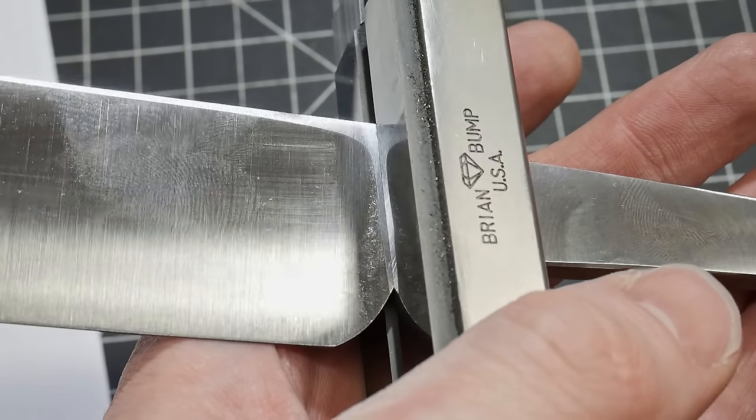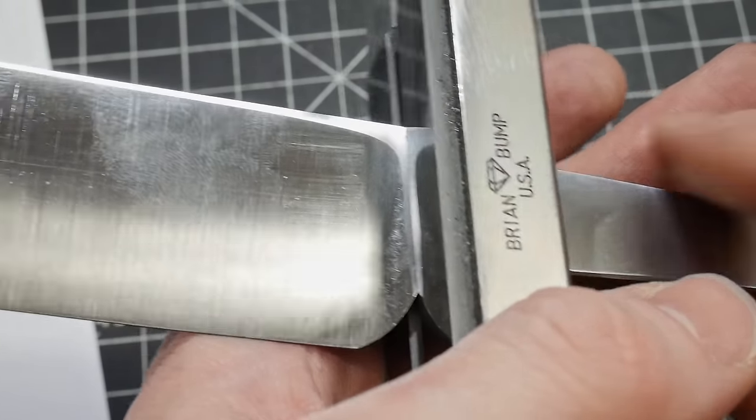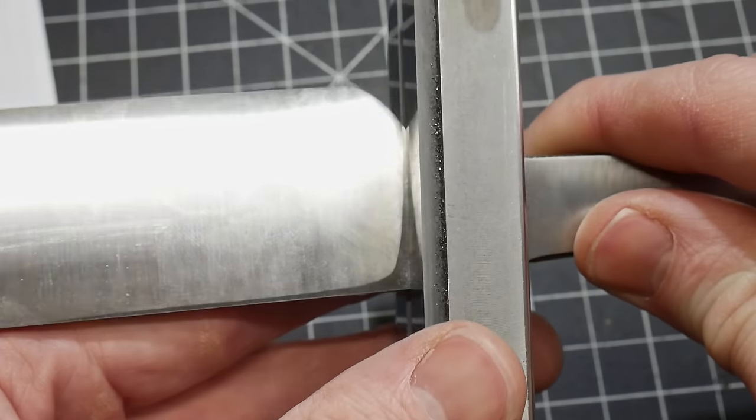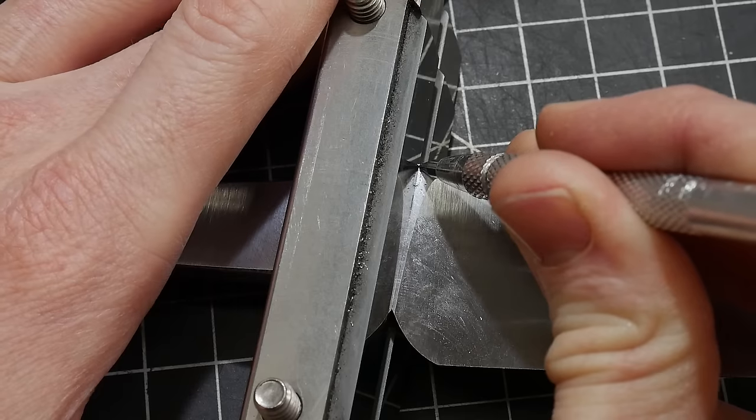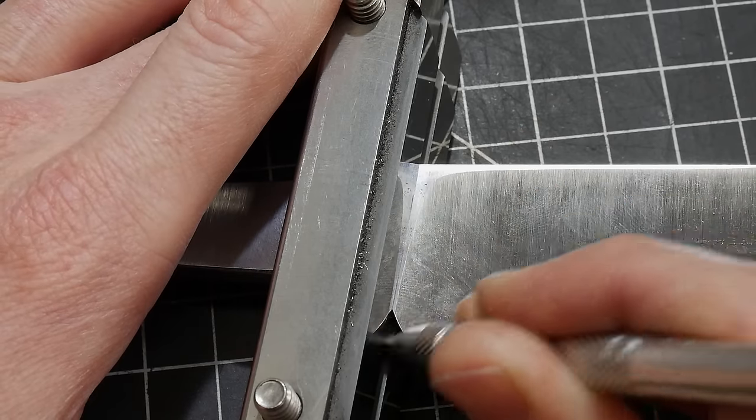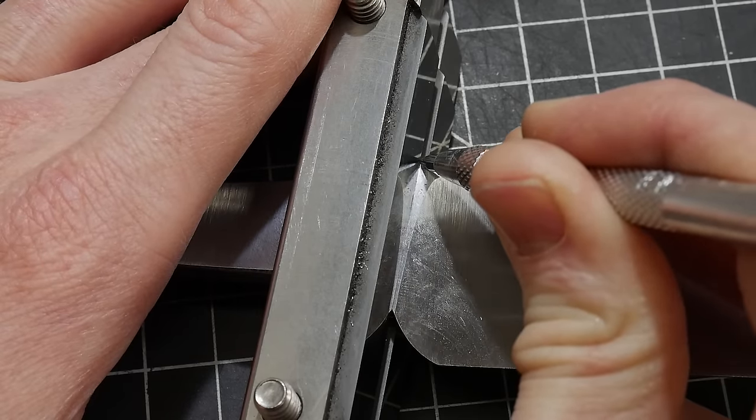I'm going to be using a waterfall grinding platen from my plunge radii which was popularized by Mr. Kyle Royer. To have some targets to line up with on the edge of the platen I'm using the Brian Bump file guide as a scribing guide.